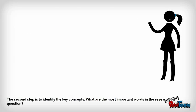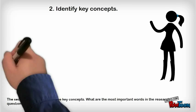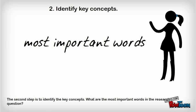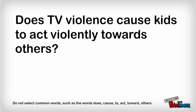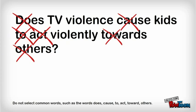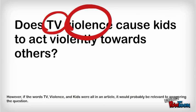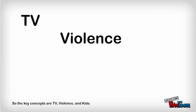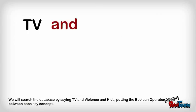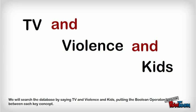The second step is to identify the key concepts — the most important words in the research question. Do not select common words such as does, cause, to, act, toward, or others. However, if the words TV, violence, and kids were all in an article, it would probably be relevant to answering the question. So the key concepts are TV, violence, and kids. We will search the database using TV and violence and kids, putting the Boolean operator AND between each key concept.